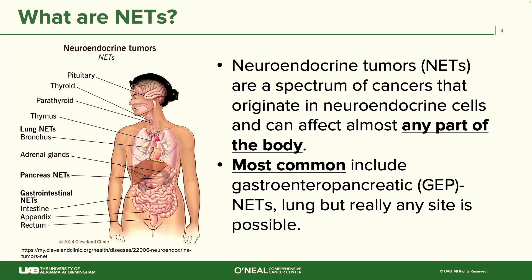Neuroendocrine tumors are a spectrum of cancers that can originate in neuroendocrine cells and can affect almost any part of the body. The most common are gastroenteropancreatic neuroendocrine tumors — those that arise along the GI tract: the esophagus, stomach, small bowel, large bowel, pancreas, the appendix. They can also arise in the lung, or really anywhere in the body. Most recently, I saw a patient whose neuroendocrine tumor started in the nose — the first time I had seen that in my practice.